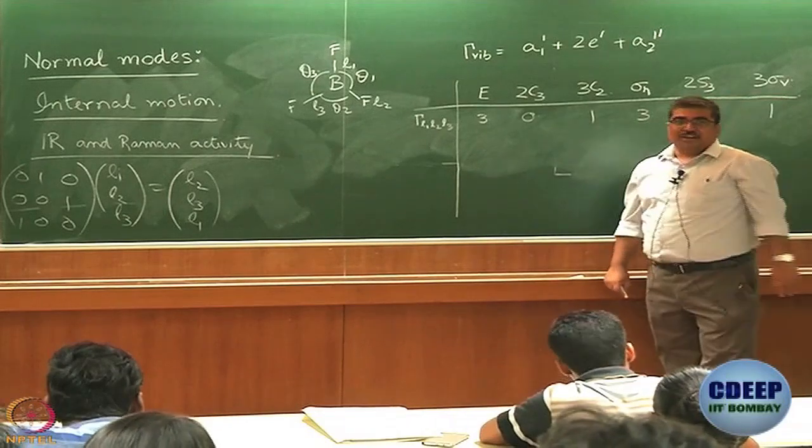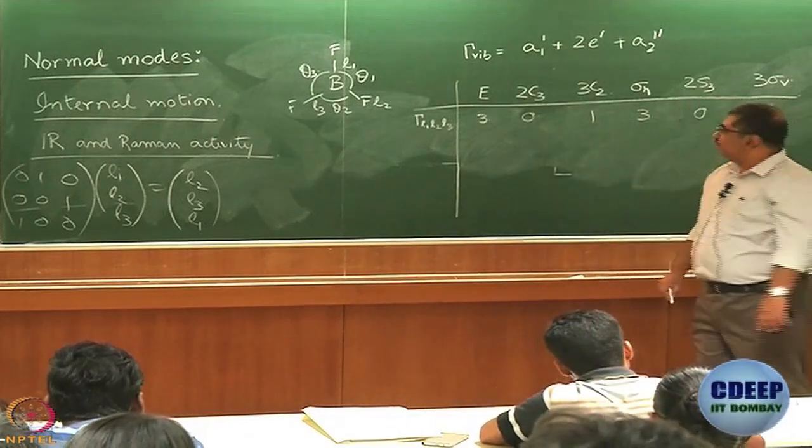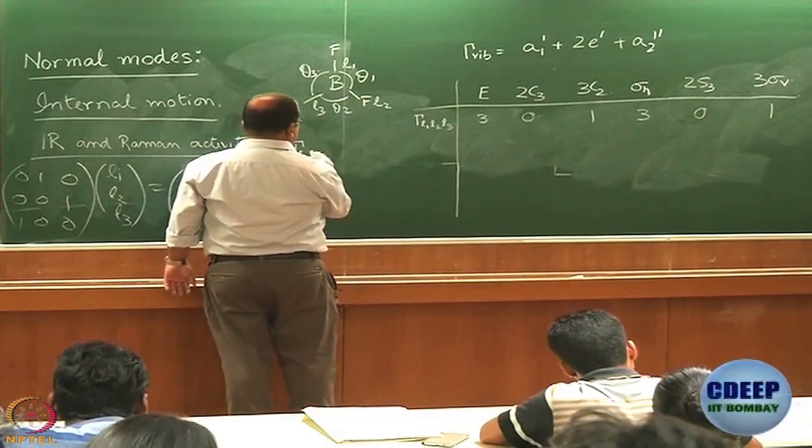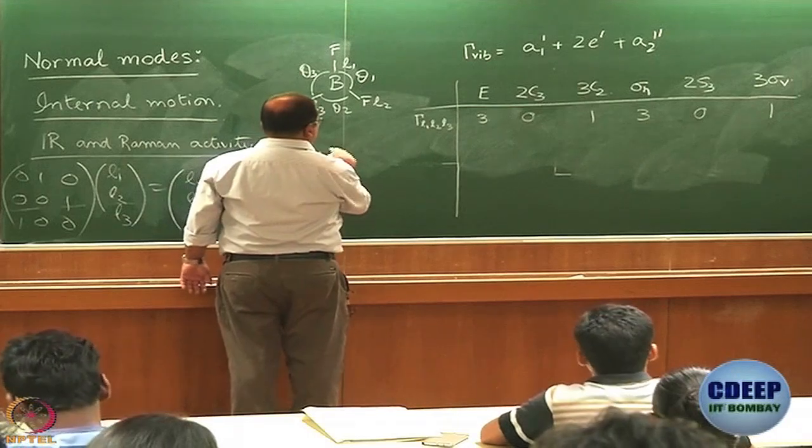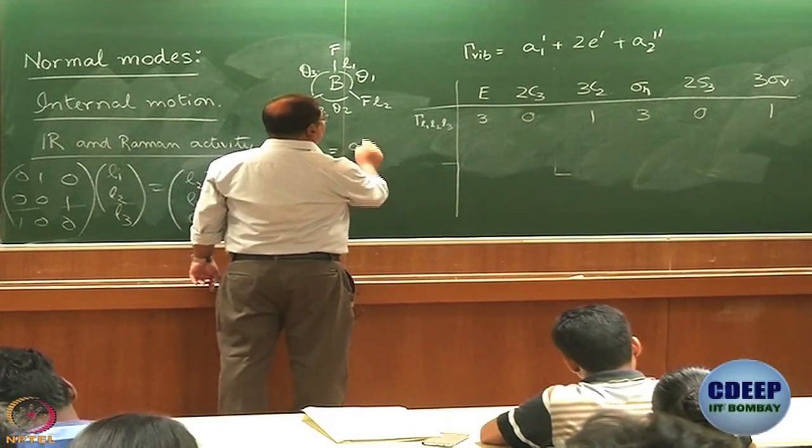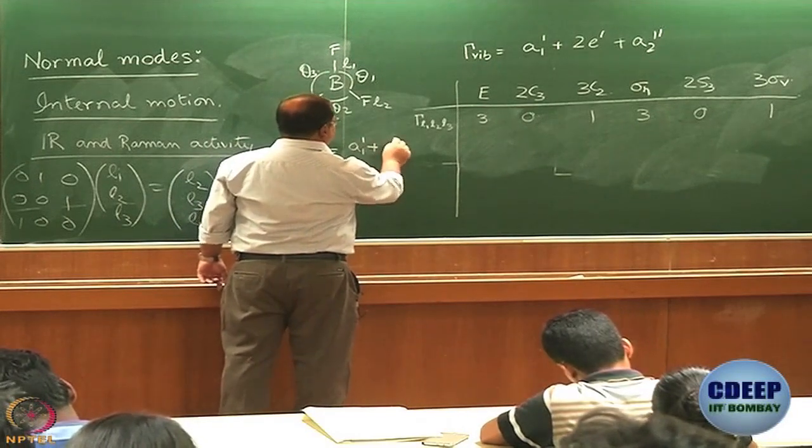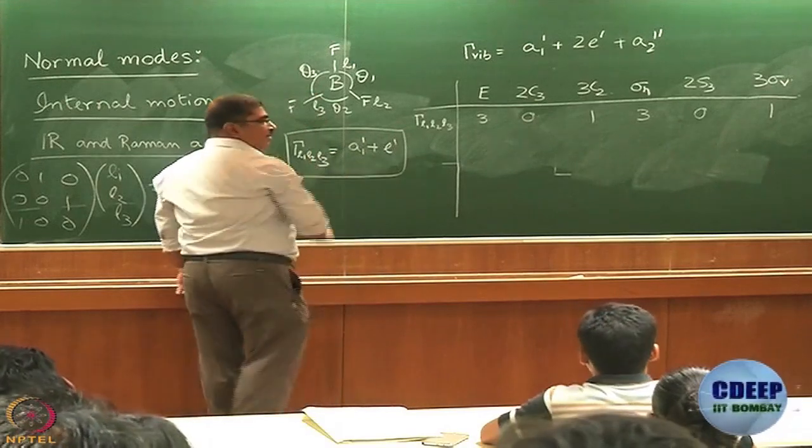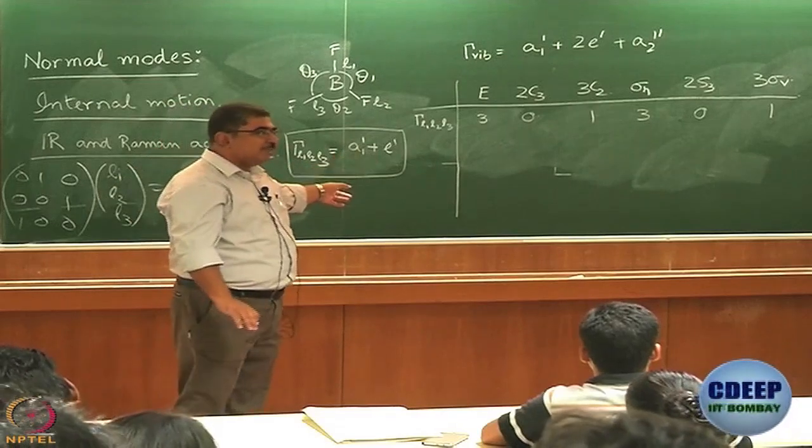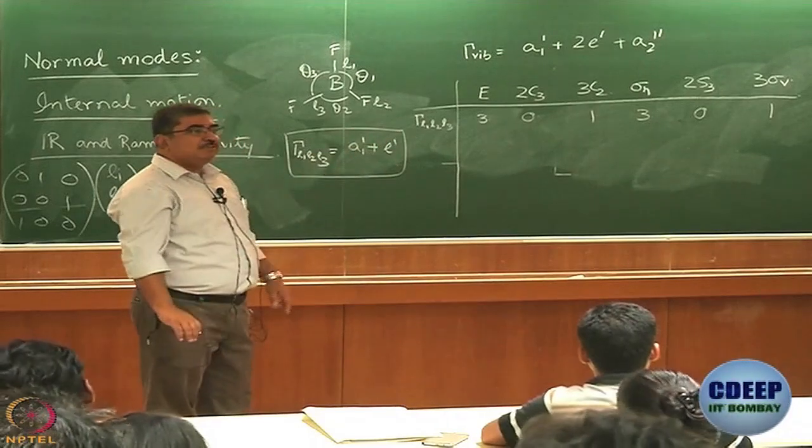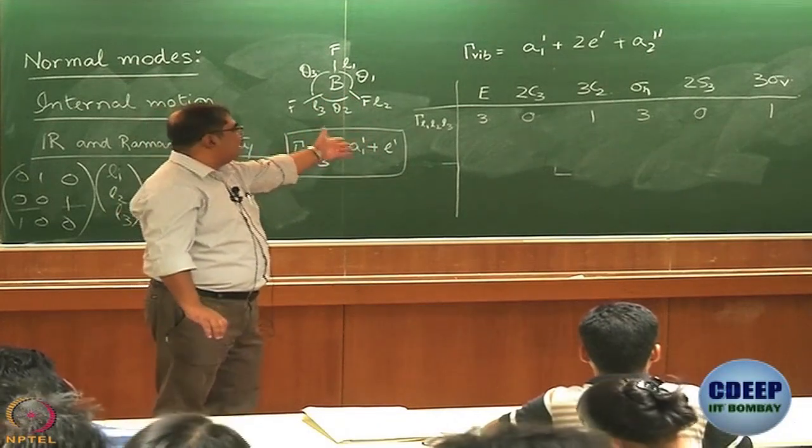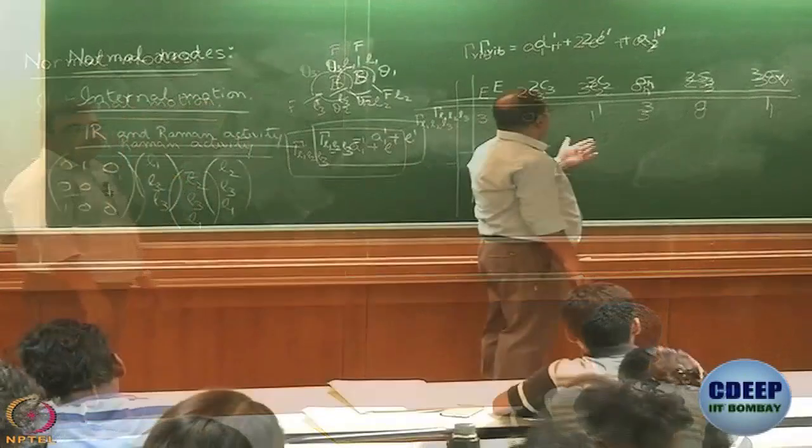3, 0, 1, 3, 0, 1. So if you use the formula, you will see that it breaks down into A1' plus E'. I am just giving you the answer to save time but you could verify this answer quickly. You have the character table in front of you. Add A1' and E' and see whether you get 3, 0, 1, 3, 0, 1 or not.